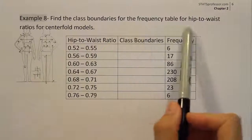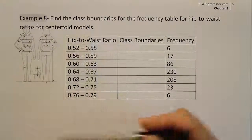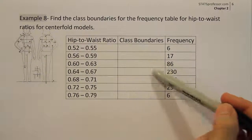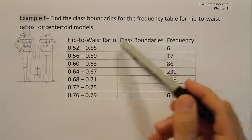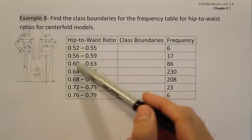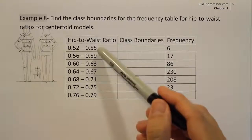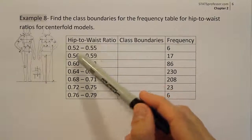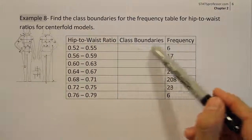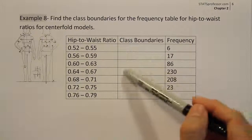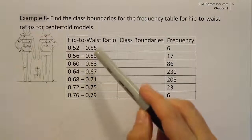Find the class boundaries for the frequency table for hip-to-waist ratios for center-hold models. What we're going to do is produce this list of class boundaries. The class boundaries are basically a new set of class limits that don't have gaps between them. So when one class ends at .55 and the next starts at .56, there's a gap. The class boundaries don't have those gaps, and we need them to create histograms later.